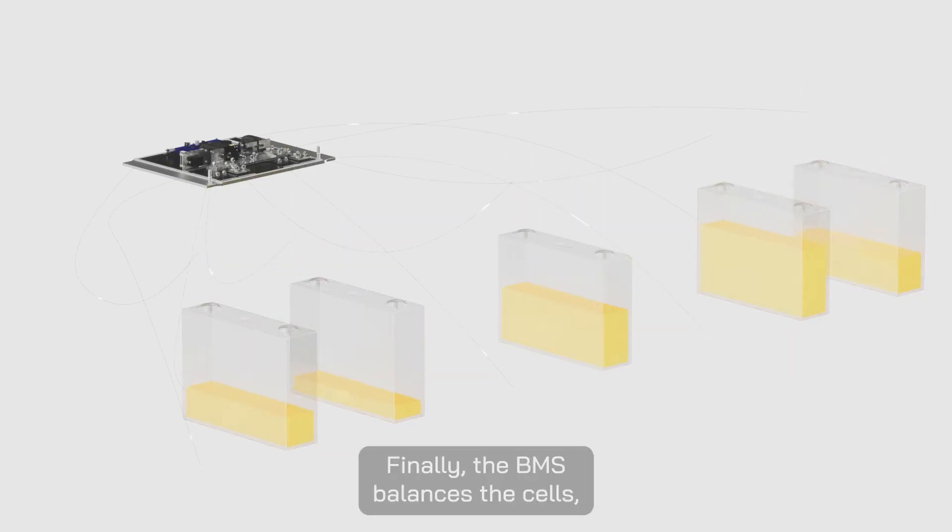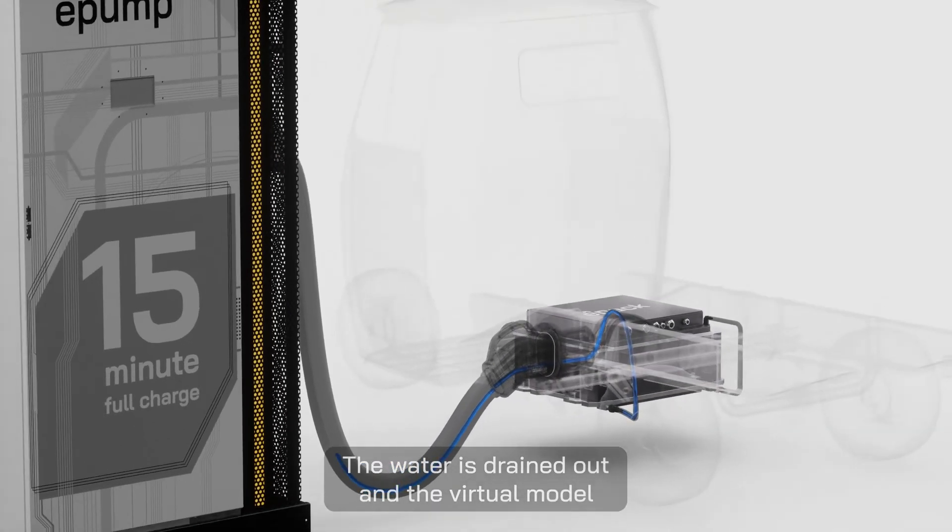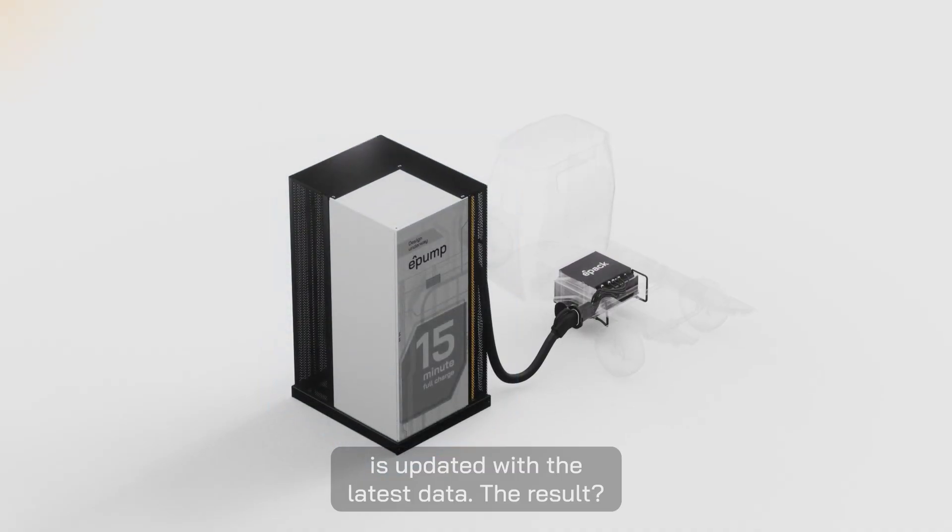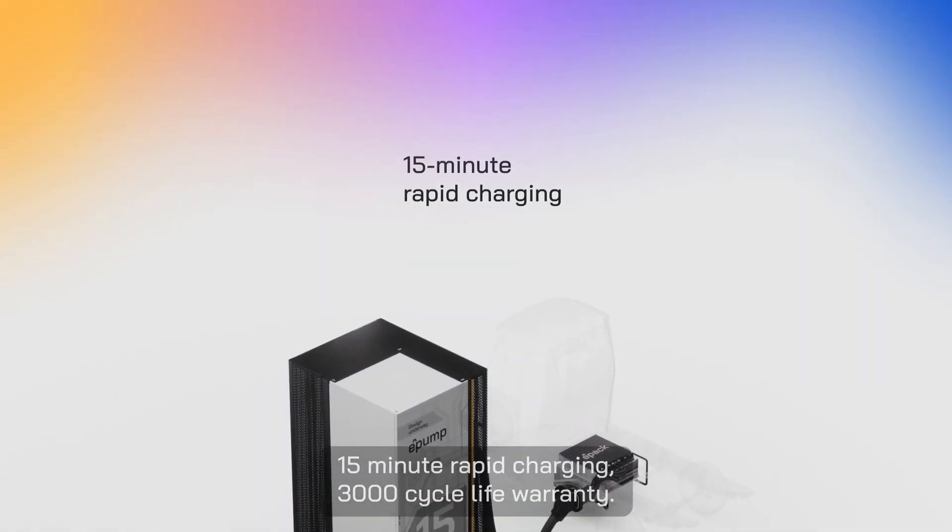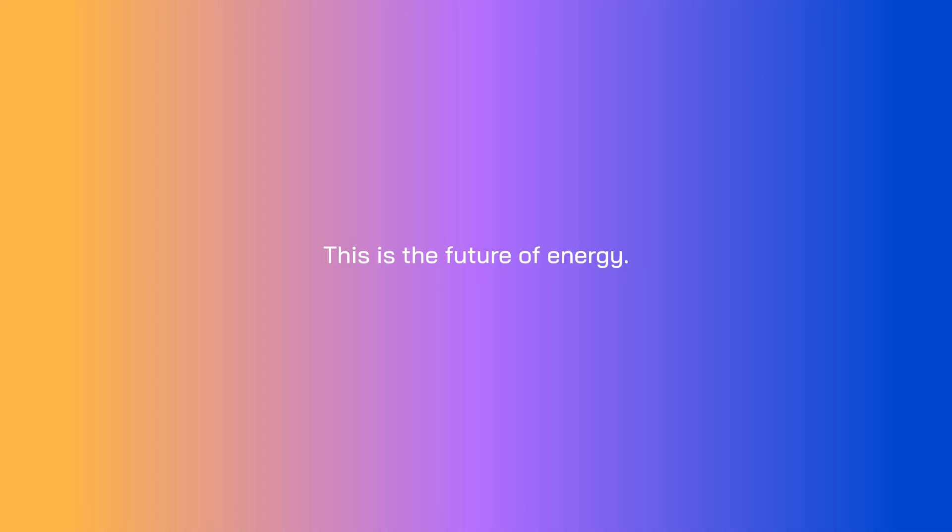Finally, the BMS balances the cells ensuring they're all equally charged, the water is drained out and the virtual model is updated with the latest data. The result? 15-minute rapid charging, 3000 cycle life warranty, all done on regular lithium-ion cells. This is the future of energy.